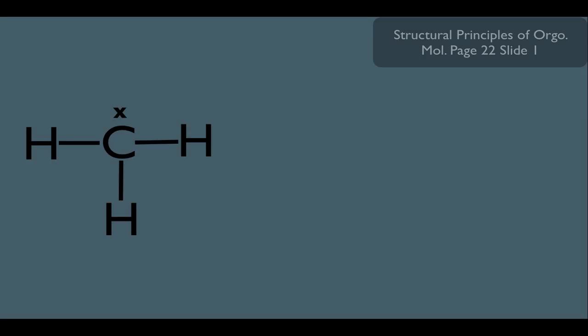To master organic chemistry, we should have an idea of some of the structural details of the methyl radical. And here's what it looks like. It has one lone electron on the carbon. And here's the structural details that I'd like you to know.